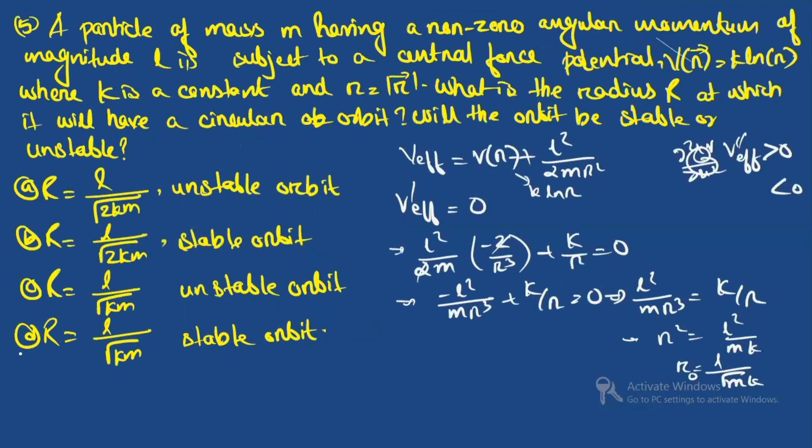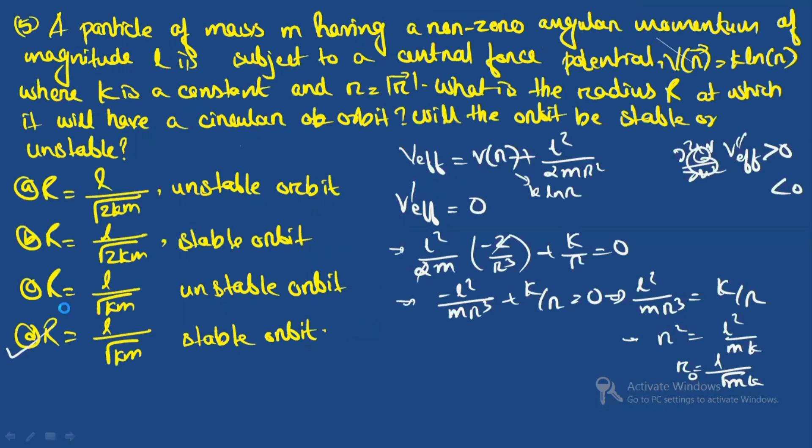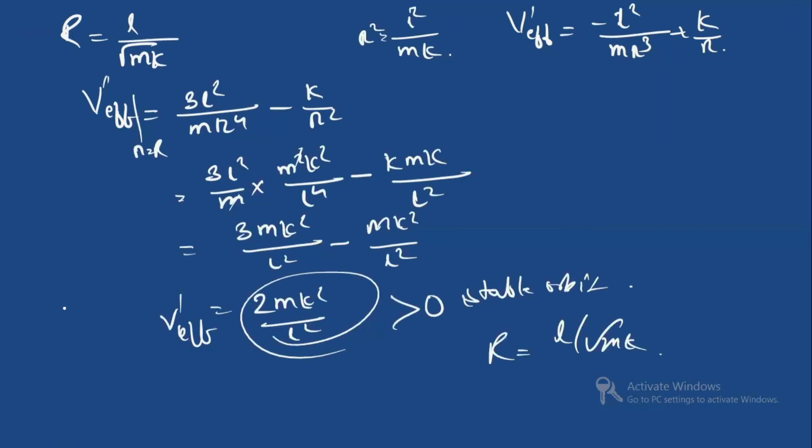The orbit is stable and the radius is r₀ = L/√(mk). The correct option is option D.